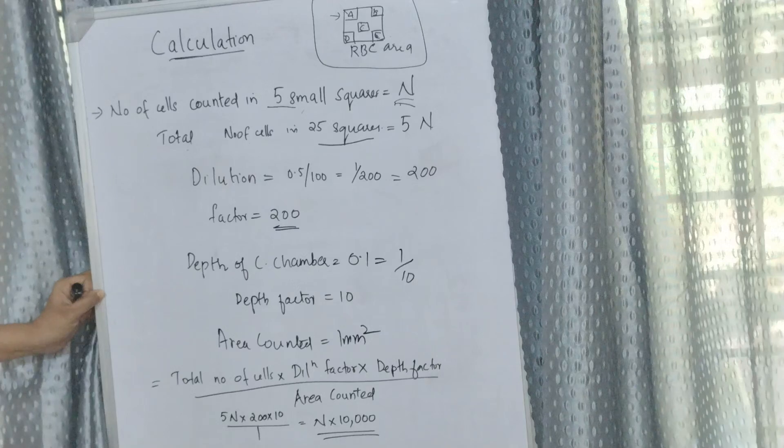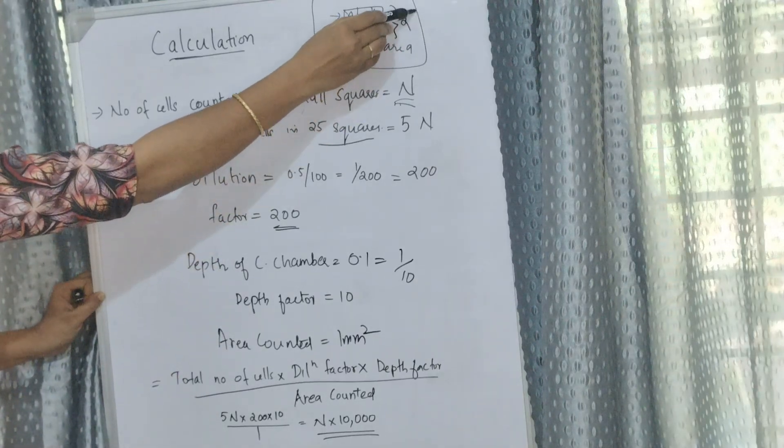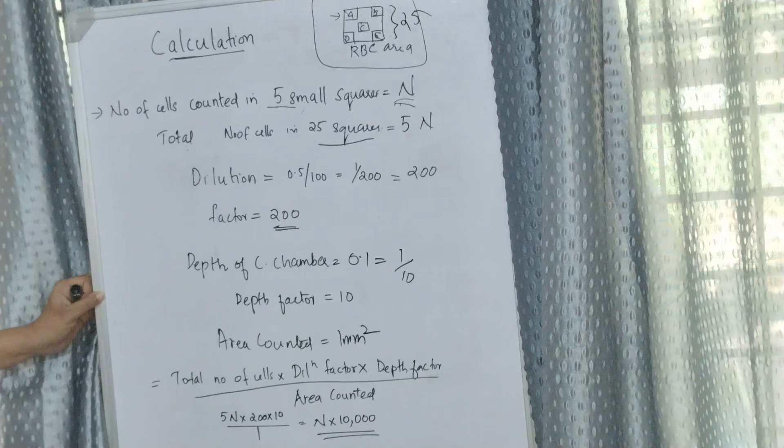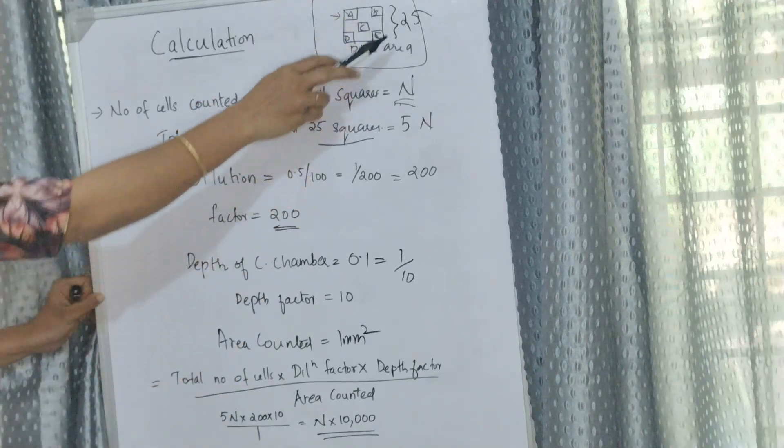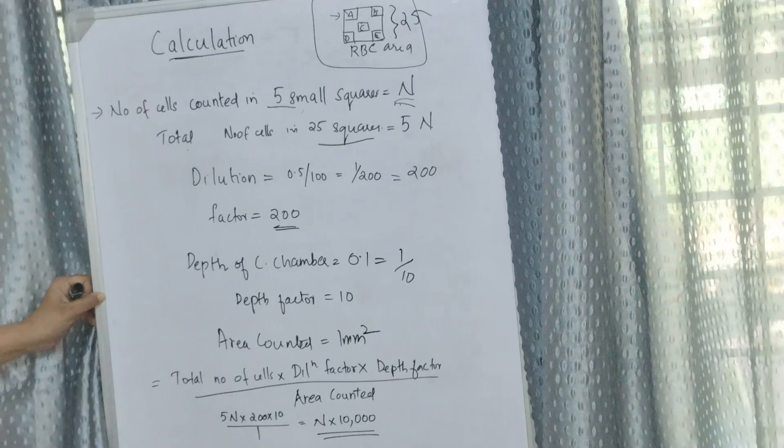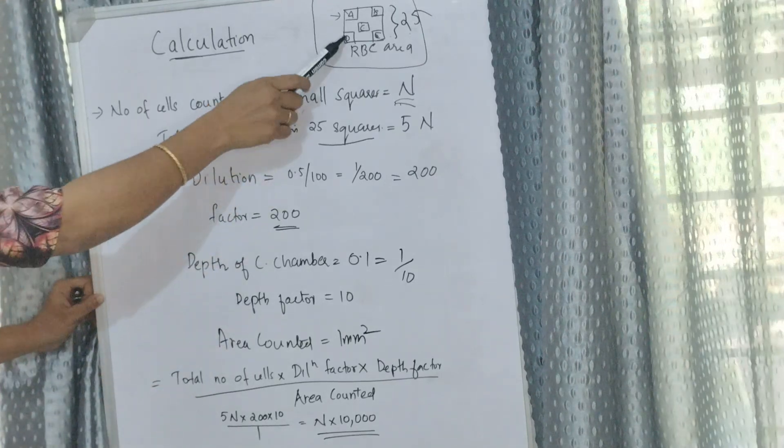We know that RBC area is the central square which has 1 millimeter square area and is divided into 25 small squares by triple lines. We have to get the number of cells present in the whole 25 small squares or the 1 millimeter square area.